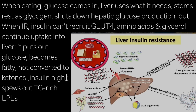However, in the setting of insulin resistance, insulin cannot recruit the GLUT4 channels. The amino acids from muscle breakdown and the glycerol from lipolysis continue to be taken up by the liver, and in the midst of plenty of food coming in, the liver puts out glucose when it shouldn't. It also ramps up the fat manufacturing machinery to become fatty. The fatty acids picked up by the liver cannot get converted to ketones because of high insulin levels, and the liver spews out these triglyceride-rich lipoproteins.